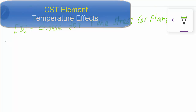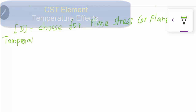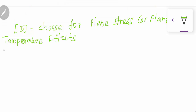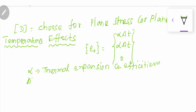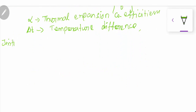If the same problem is asked with a temperature effect, you must find the initial strain of the element, calculated as α·ΔT, where α is the thermal expansion coefficient and ΔT is the temperature difference (final minus initial temperature in degrees Celsius). The initial strain vector is: ε0 = (1+μ)·α·ΔT · [1, 1, 0]ᵀ, for plane stress condition.